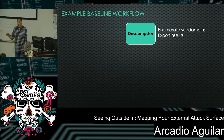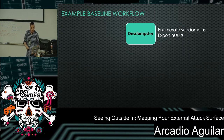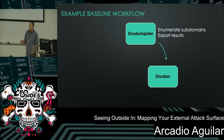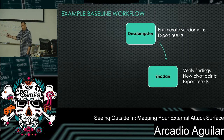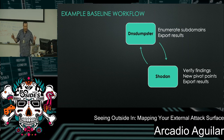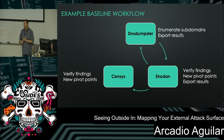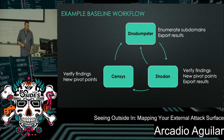Here's a quick visual workflow that worked well for me. Start with DNS Dumpster — enumerate subdomains and export the results. Take that into Shodan to verify the findings from DNS Dumpster, find new pivot points, and export those results. You might find yourself going back and forth between DNS Dumpster and Shodan depending on what you find about your organization. At some point you'll get really good visibility of what your company has, then move that information into Censys to verify findings and discover new pivot points.